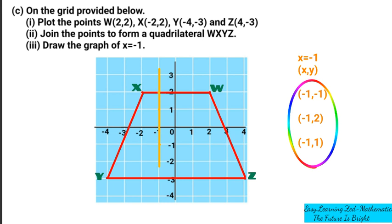So basically, this is the graph we're supposed to come up with in an exam. If you have got questions, you can ask in the comment section. Otherwise, this is how you approach the coordinates, and that's how you come up with the quadrilateral, and that is how you draw a graph with X equal to negative 1. If you have any questions, you can ask in the comment section. Thank you so much for watching this video — I hope it has helped you to revise. Please make sure you share with your friends, and if you haven't subscribed to our YouTube channel, we urge you to subscribe.